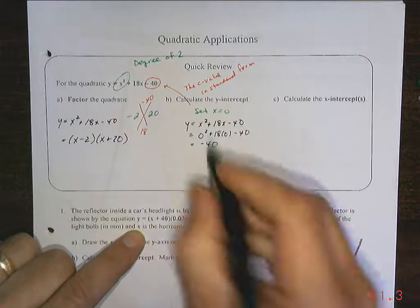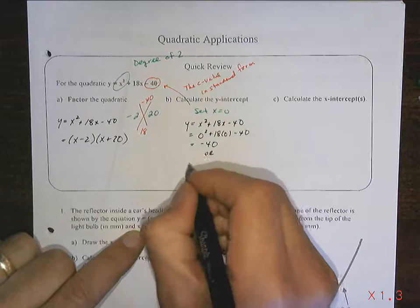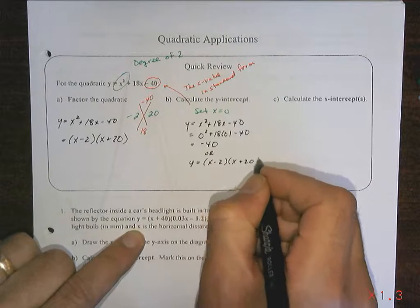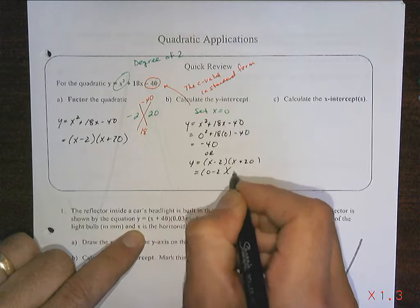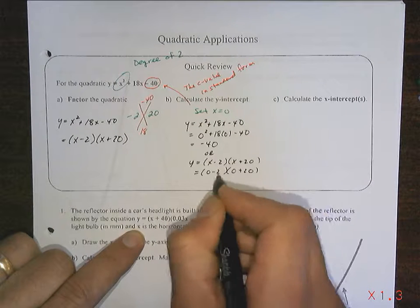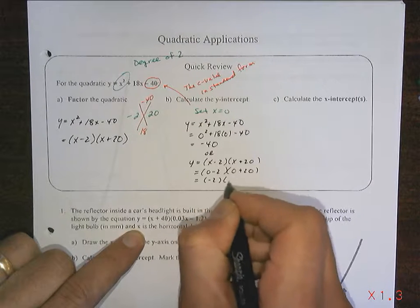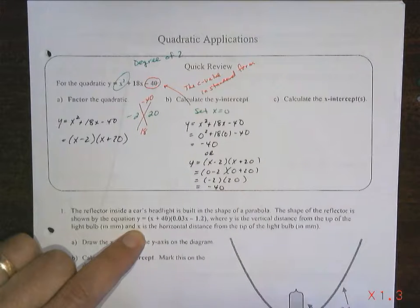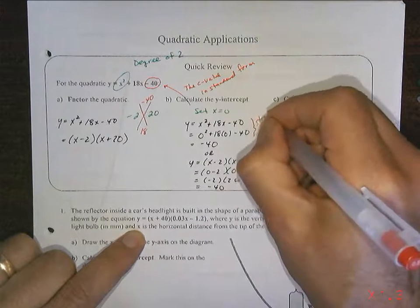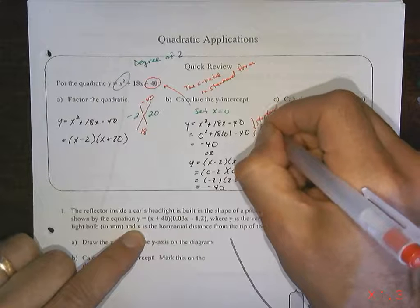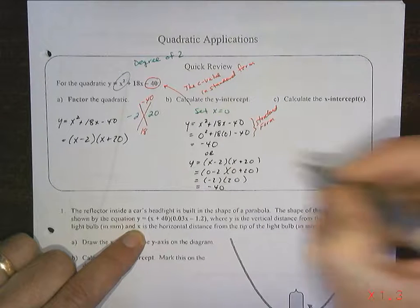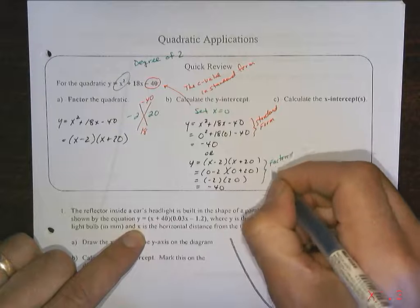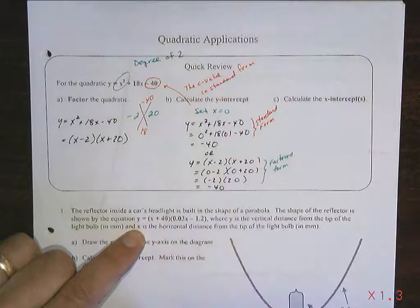Or I can work it out, and I come up with the same answer. The third way to do this is to use our factored form. And the factored form, when we set x equal to 0, will be 0 minus 2, 0 plus 20. This is still multiplication, so it's negative 2 times 20, which is negative 40. So again, this is using standard form, and this is using factored form. And they represent the exact same parabola.